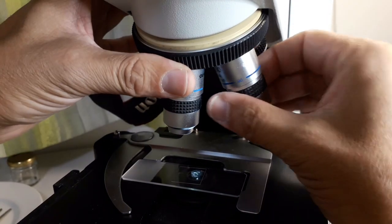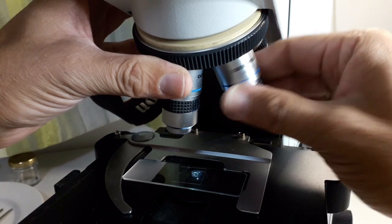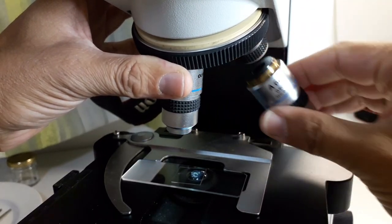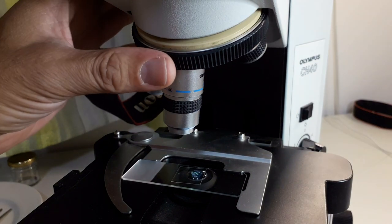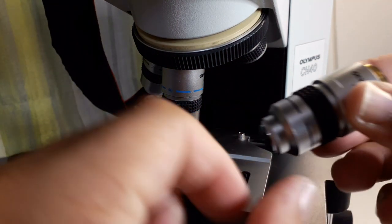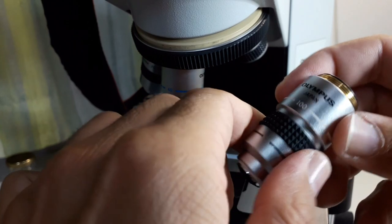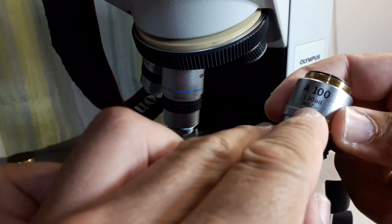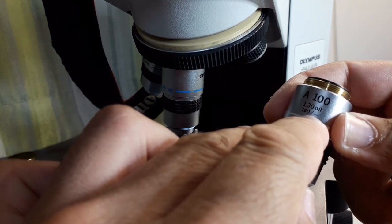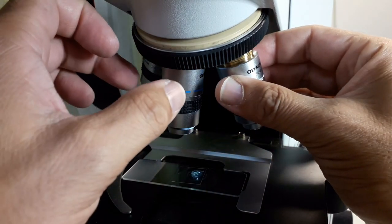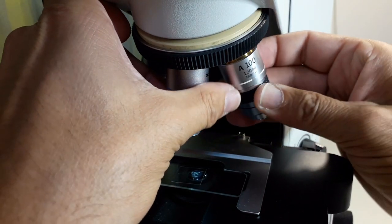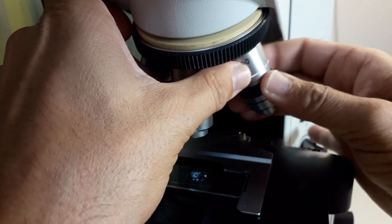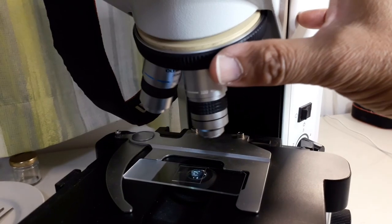I'm now removing my 60 times dry objective, so that's the non-oil objective, to exchange it with the 100 times oil immersion objective. In most microscopes, this is a step that you don't have to do because it's already in there. You can see that there's also no cover glass required because the oil is taking the place, filling up the space between the cover glass and the air. Therefore, the objective does not see, so to say, the thickness of the cover glass.